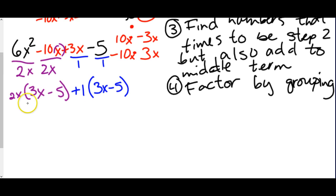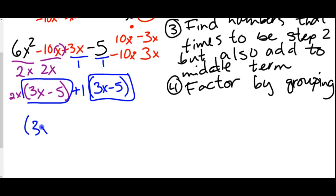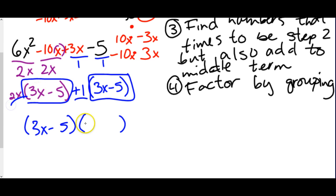Now when we were factoring by grouping, we notice these two parentheses are the same — (3x - 5) matches. That's what goes first; we only need one of them. Just like before, even though there were two matching groups, when we got to the factoring step, we only had one (3x - 5) in front of the parentheses. And then what's in front of the parentheses becomes your second parenthesis.